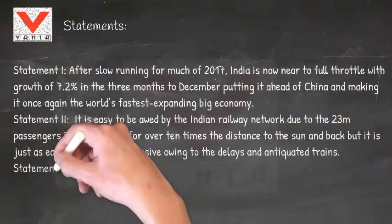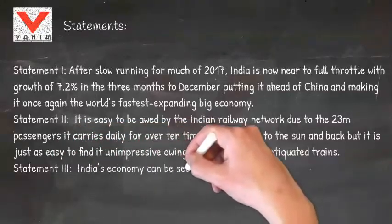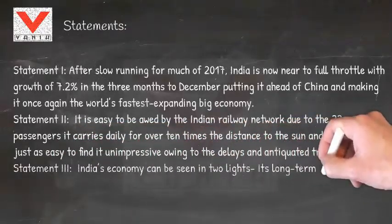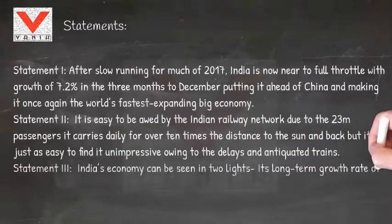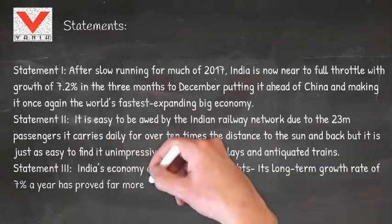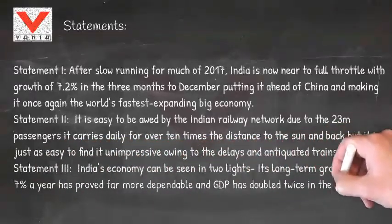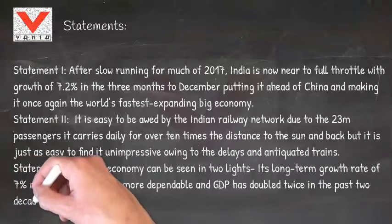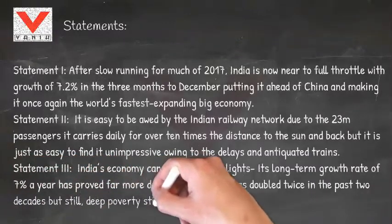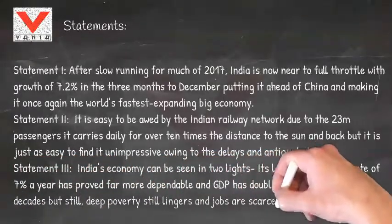Statement 3: India's economy can be seen in two lights — its long-term growth rate of 7 percent a year has proved far more dependable and GDP has doubled twice in the past two decades, but still, deep poverty lingers and jobs are scarce.